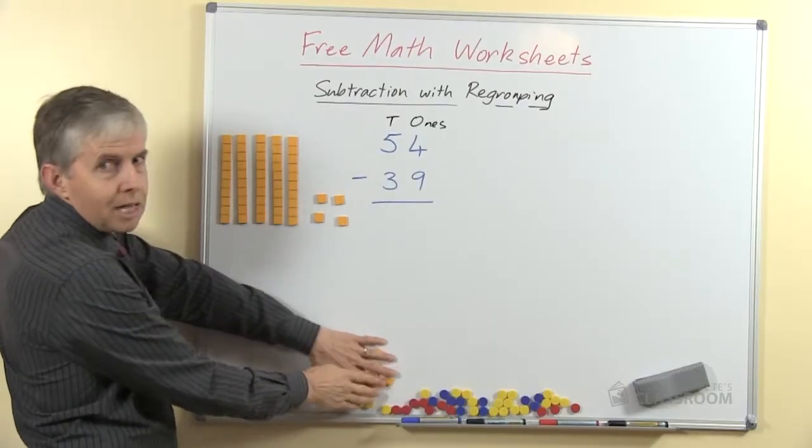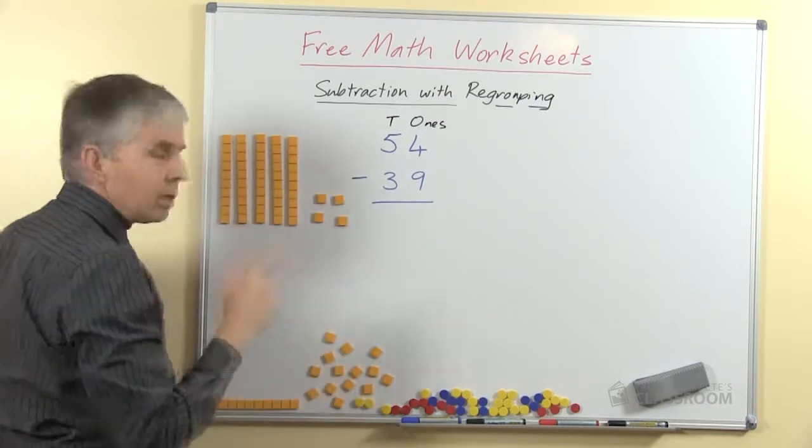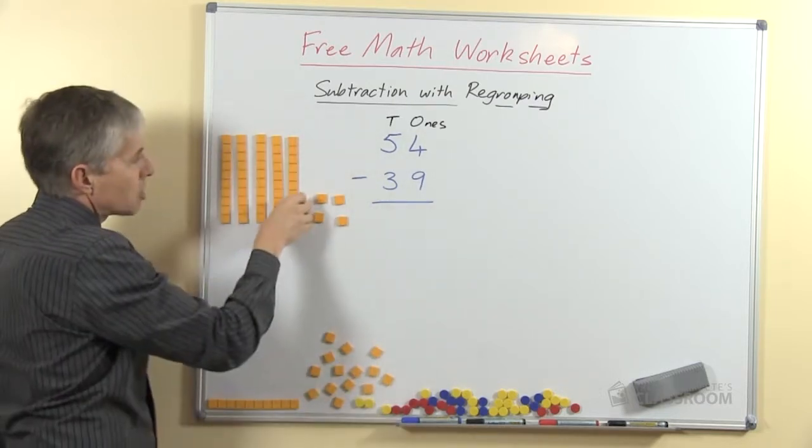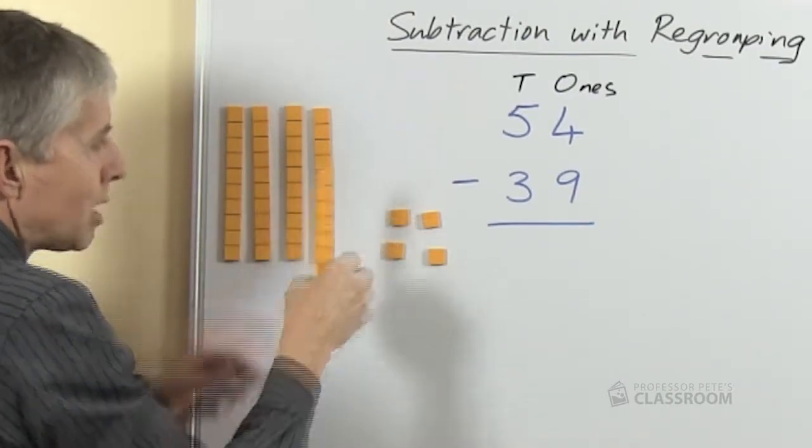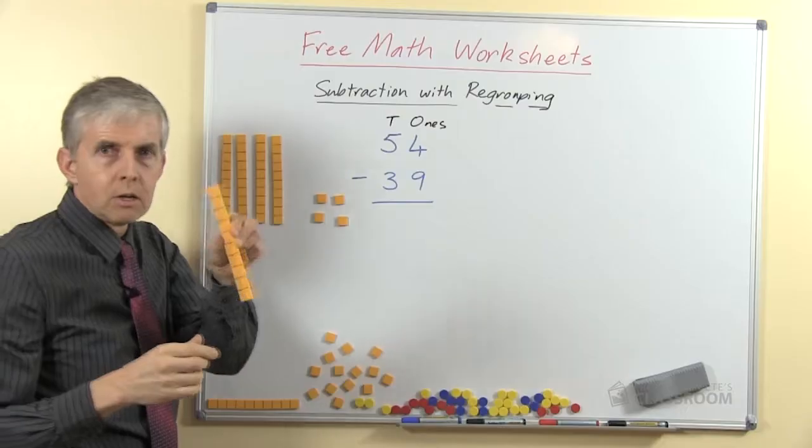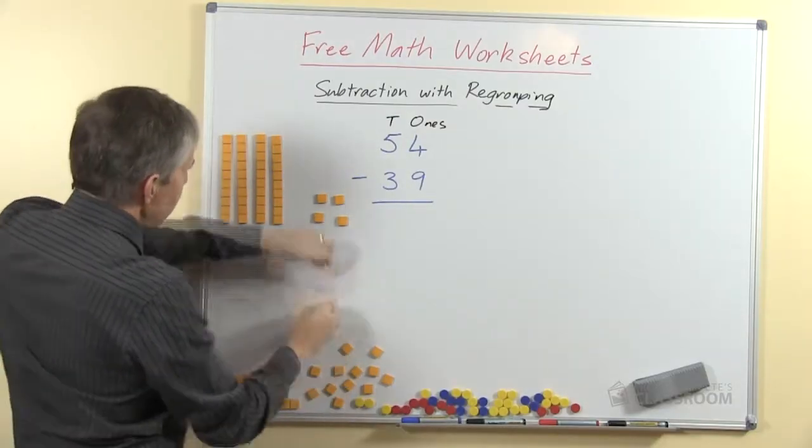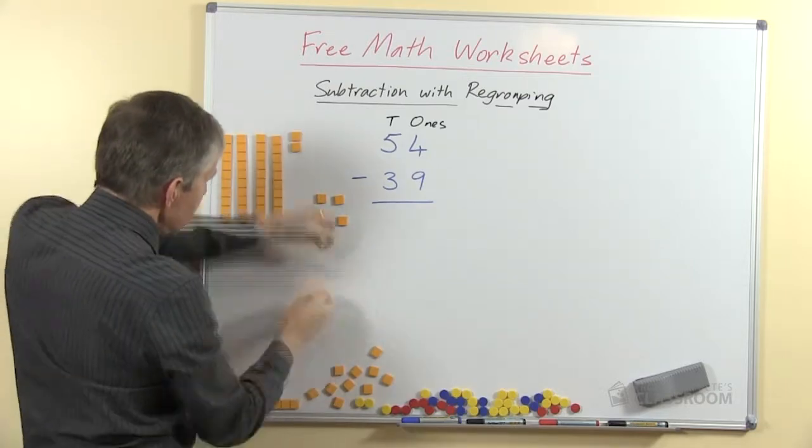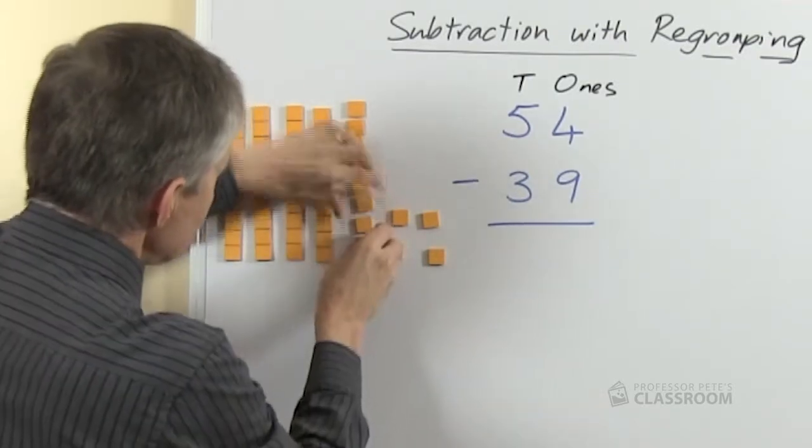So where can we get some more ones from? Now we're not allowed to take them from down here because this is the number we're starting with. So the only way we can do it is to do a swap or a trade of this 10 for some extra ones. Now how many ones would this be worth? Of course it's 10 ones, so I'll just move this down here and I'll put another 10 ones here.